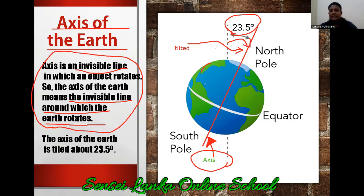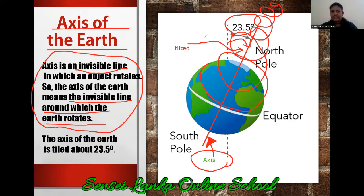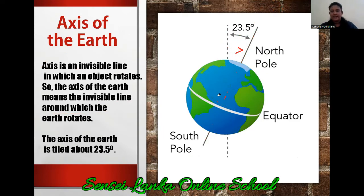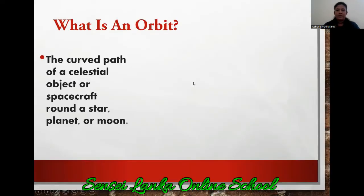When the earth is going around this axis we say it is rotation — when the earth is going around its own axis. So now look at this. I will give you a definition about the rotation. You have to wait with me.